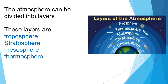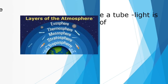The atmosphere can be divided into layers: the troposphere, stratosphere, mesosphere, and thermosphere. The outermost layer is called the exosphere.